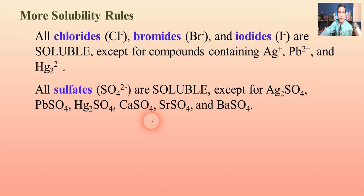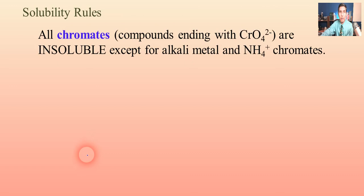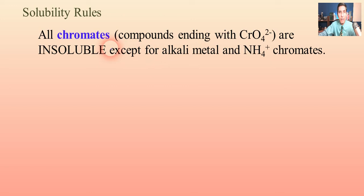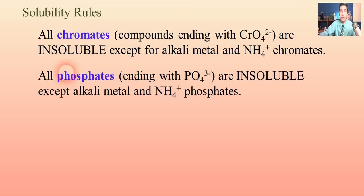Now, the next slide has a bunch of compounds that are usually not soluble. Chromates — compounds ending with CrO4 2− — will normally be insoluble, except when they have an alkali metal or ammonium at the front, which is always going to be soluble. Every other chromate is insoluble. Phosphates are the same way: if you see PO4 at the end of something, it's probably going to be insoluble, except for alkali metal and ammonium phosphates, which always dissolve in water.